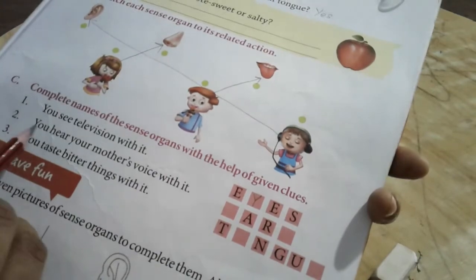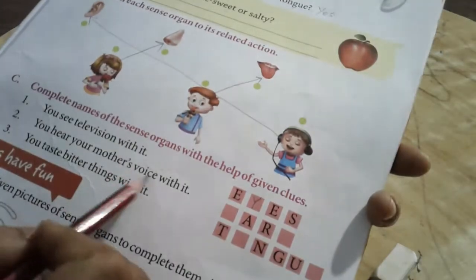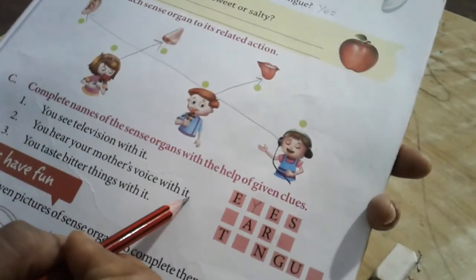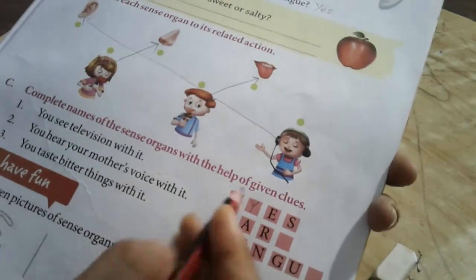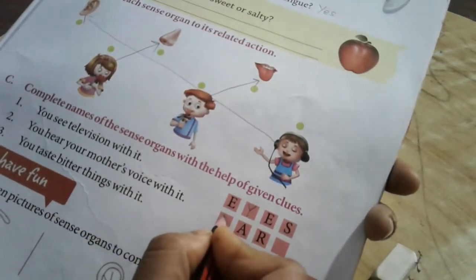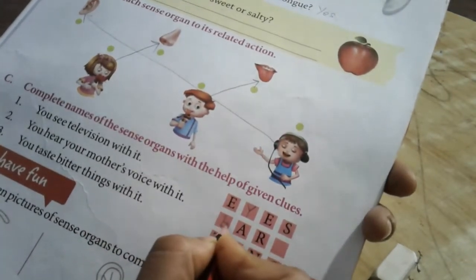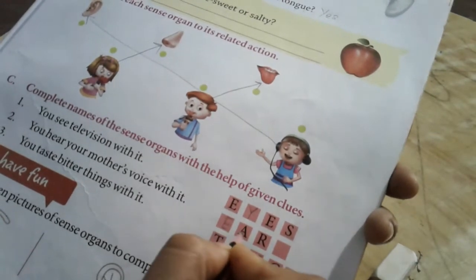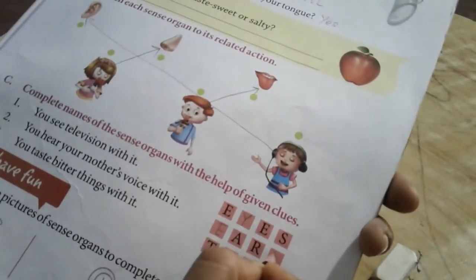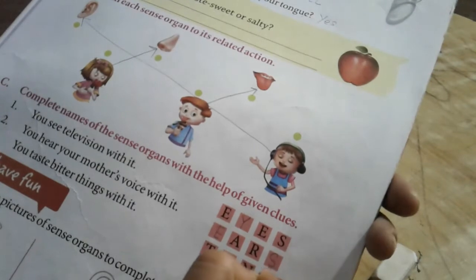Number two. You hear your mother's voice with it. Mommy, who speaks? Where does it sound? With your ears. So fill the missing letters. E, A R is given, and then S. Ears.